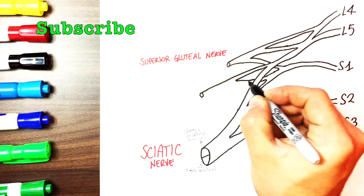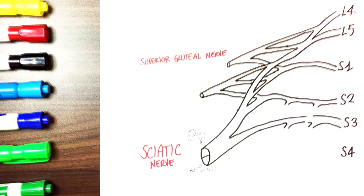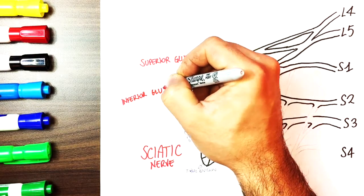From L5, S1 and S2 originates the inferior gluteal nerve which supplies the gluteus maximus muscle.